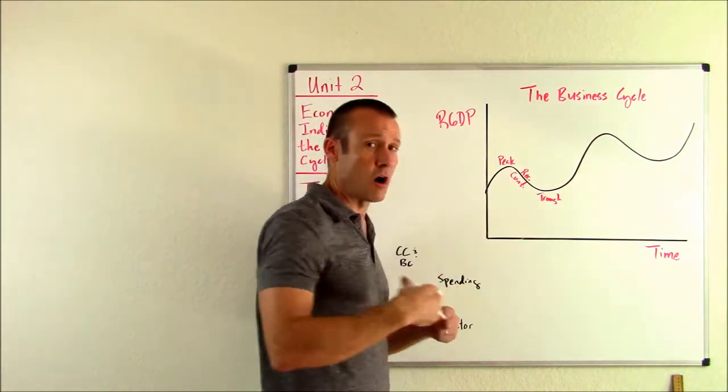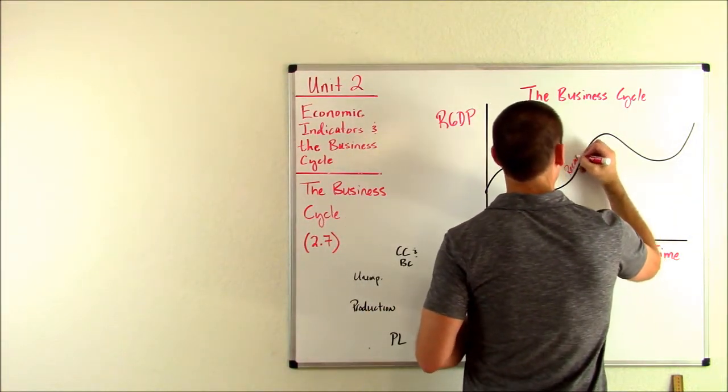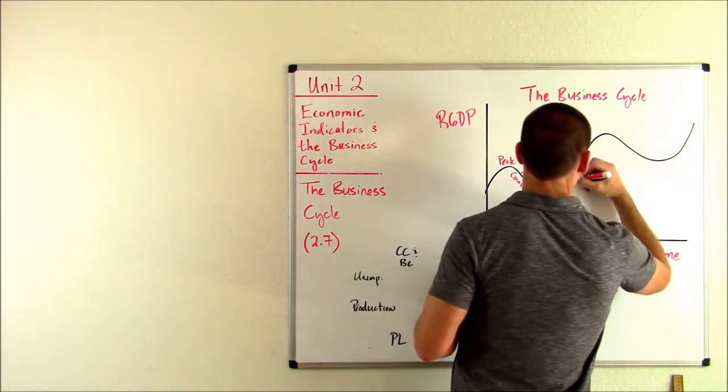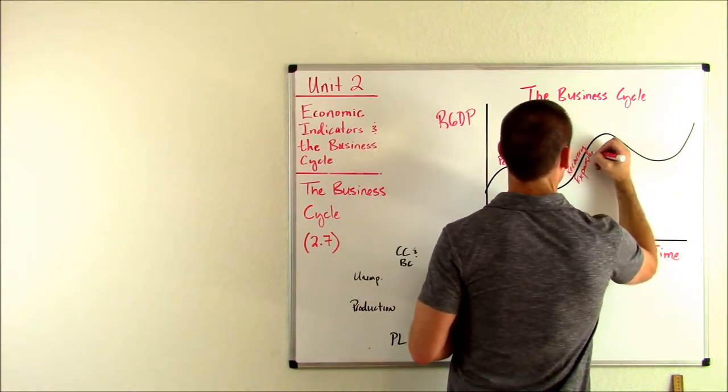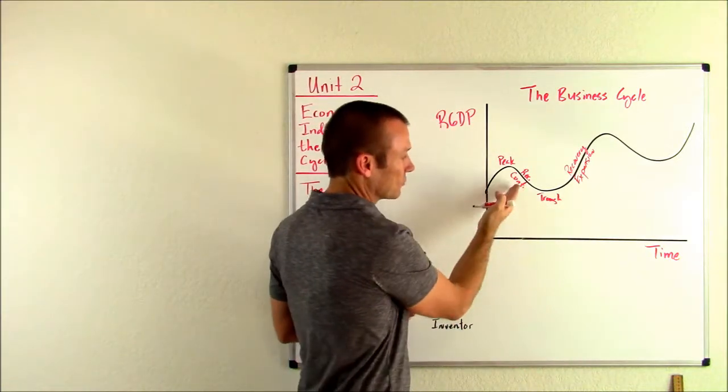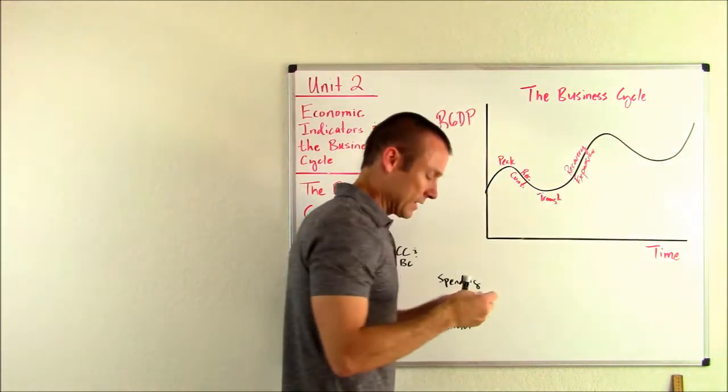Peak, recession, contraction, trough, and then a period of recovery or expansion. And then the pattern simply repeats. Peak, contraction, trough, expansion. The pattern repeats.